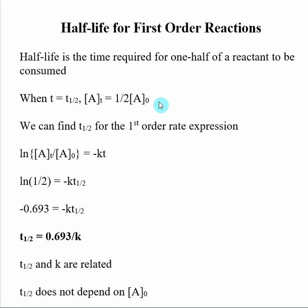So how we actually come up with this half-life equation is we take the idea that when my time is equal to my half-life, t1/2, then the concentration of my reactants at that time is going to be equal to one-half of my initial concentration.